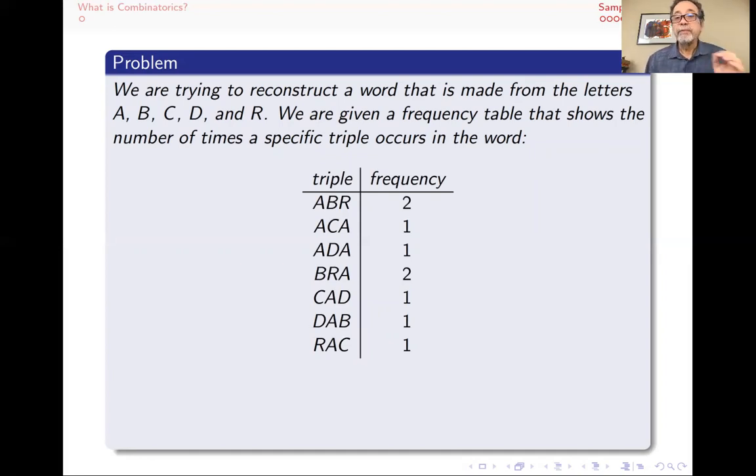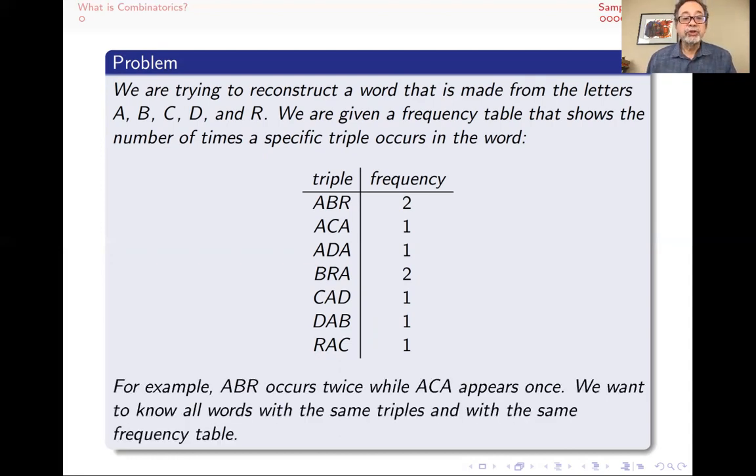Two places for BRA, and one place for RAC, for example. This is the frequency table of all the triples and no other triple. And so I want to be able to reconstruct that word, and I want to know whether or not there's one word or many words or no words with these triple frequencies. So this is another combinatorial problem. We want to know, does this certain arrangement exist? And if so, how many of them?